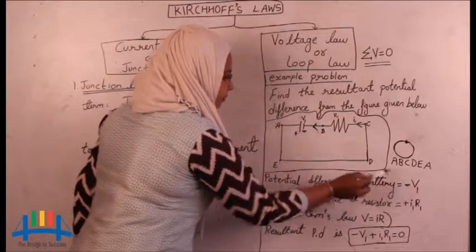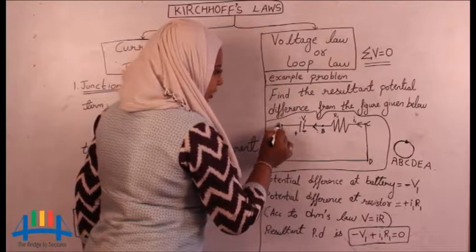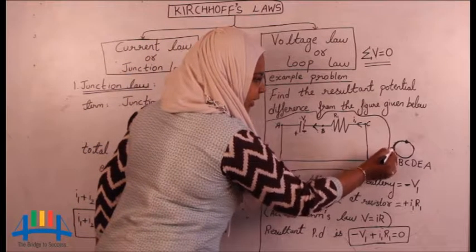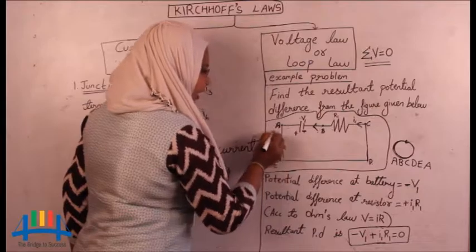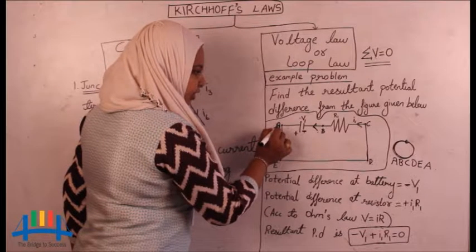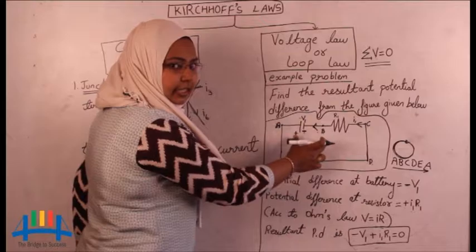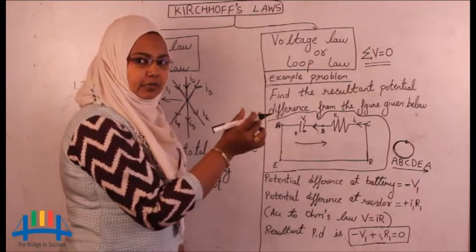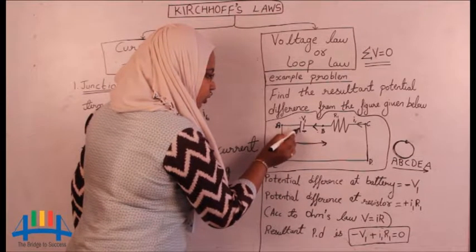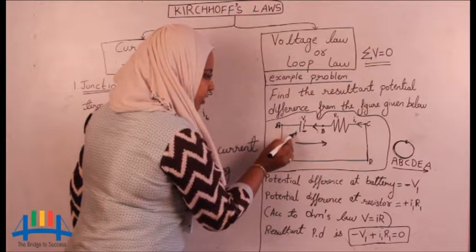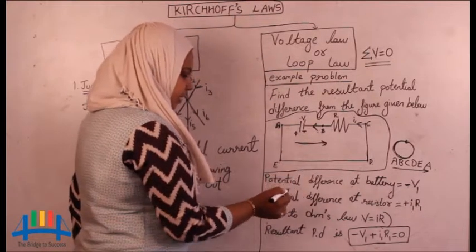Here you can see I have written V1. Why minus? Because in this loop — A, B, C, D, E, A — a loop means the path starting and ending at the same point. So our path starts at A and goes A, B, C, D, E, ending back at A. If you know the loop direction, then you can assign a sign to the potential difference at the battery. In this loop direction, when you go through the battery from positive to negative, that is why we get a negative sign for the potential difference at the battery.